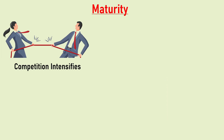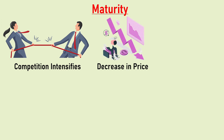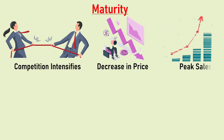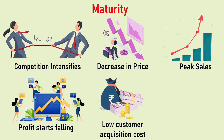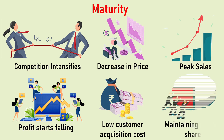Moving on to the maturity stage. At this stage the competition intensifies, i.e. there is cutthroat competition in the market between firms and the market gets saturated. Further, there is a decrease in the prices of the product due to competition and innovations in technology. The product encounters peak sales or sales continue to rise but at a decreasing rate. There is a slowdown in sales growth and as a result profit is stabilized or starts to decline. Further, there is low customer acquisition cost, i.e. the company does not have to spend much for acquiring customers, and the company attempts to maintain its market share.